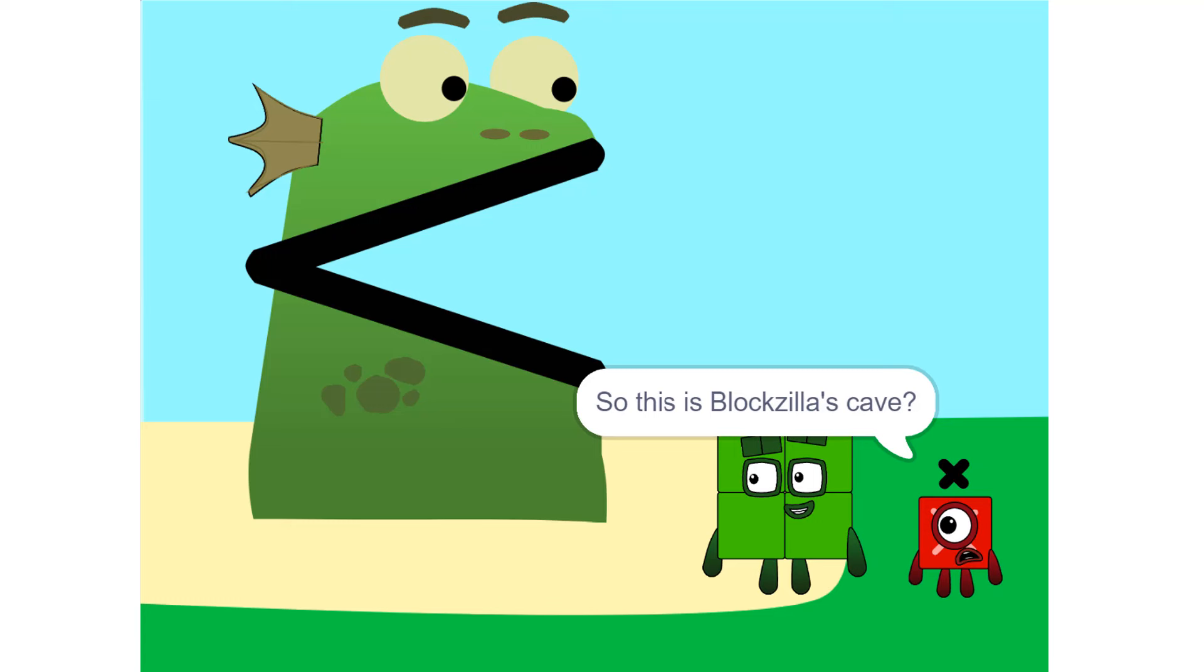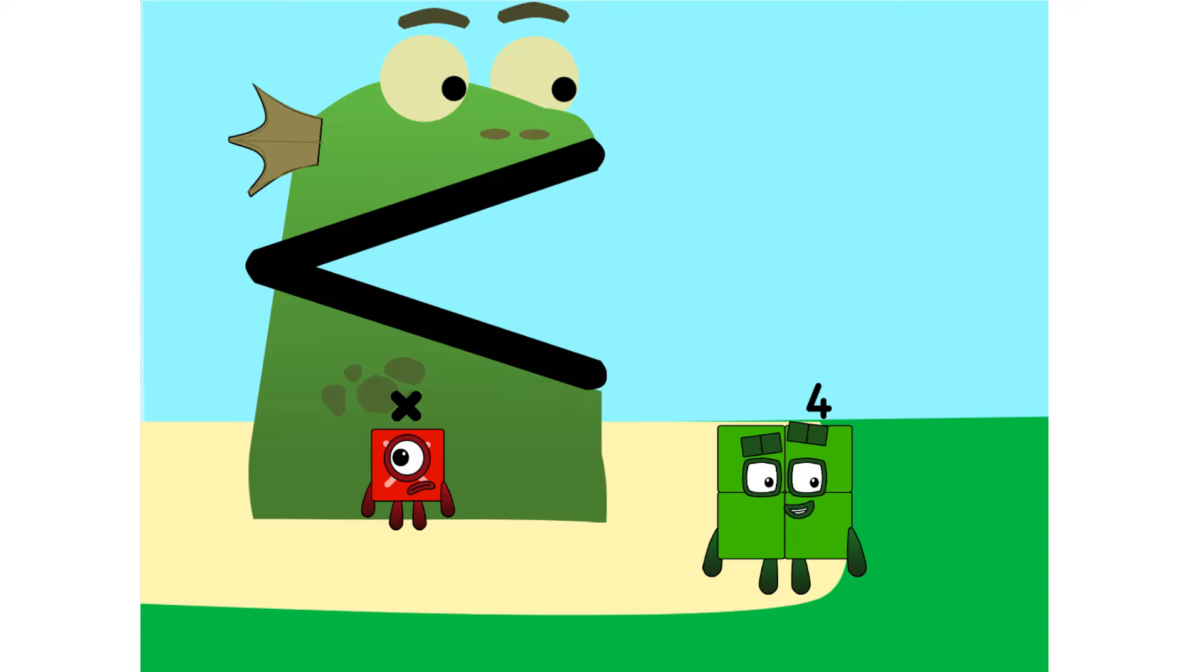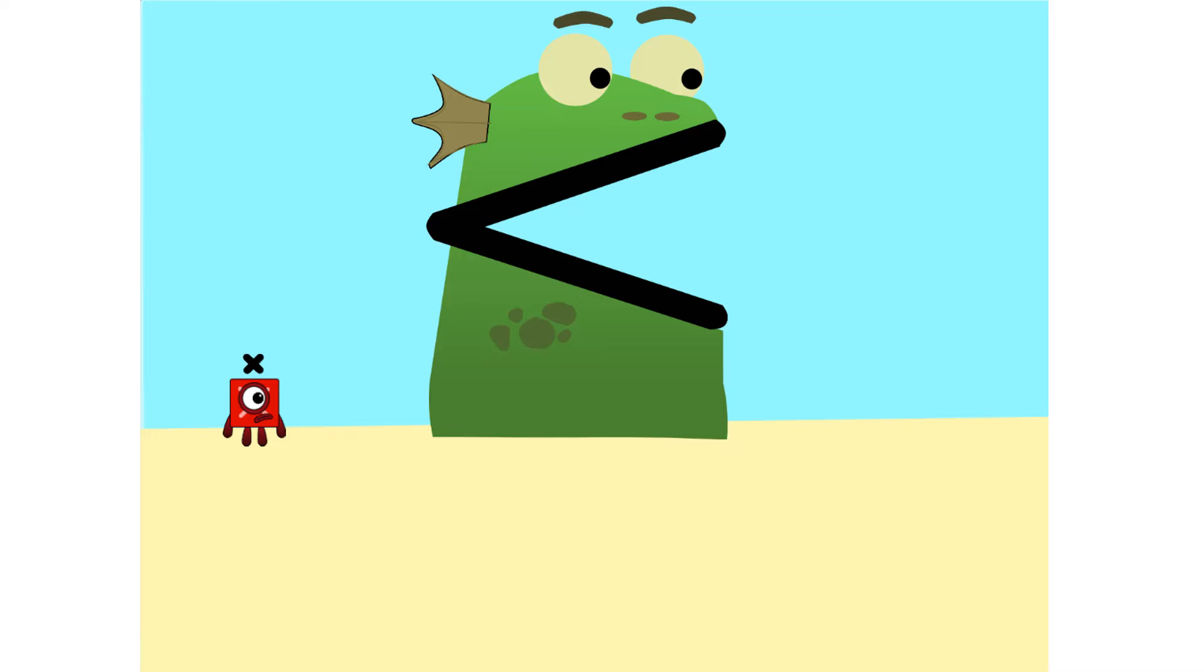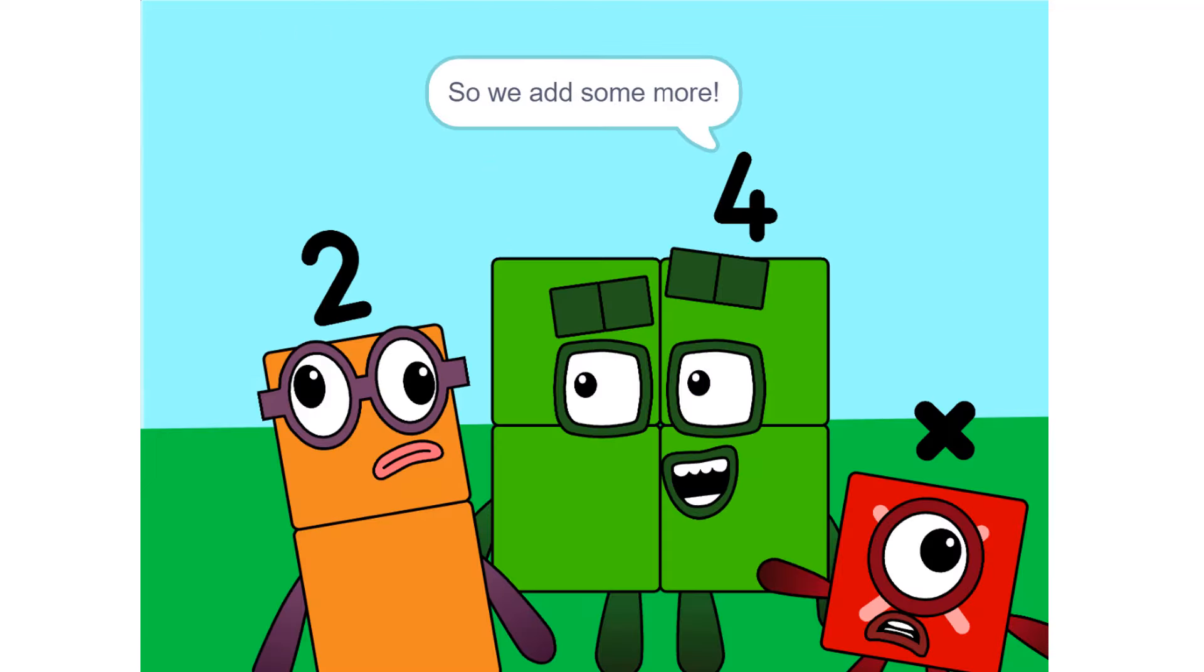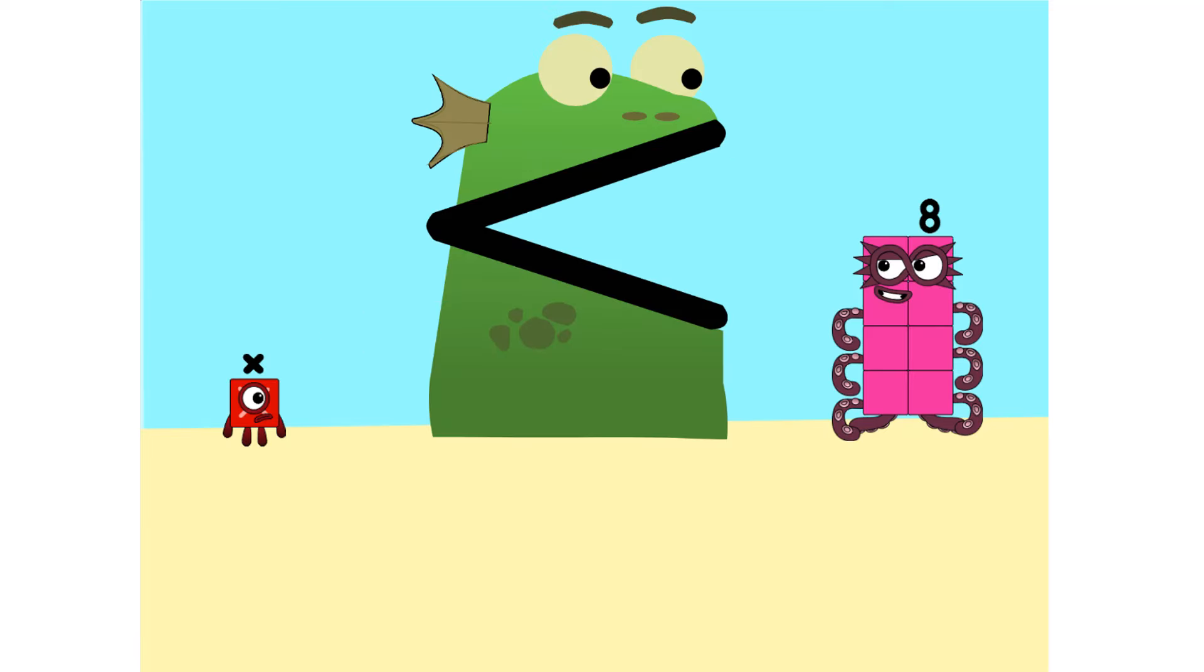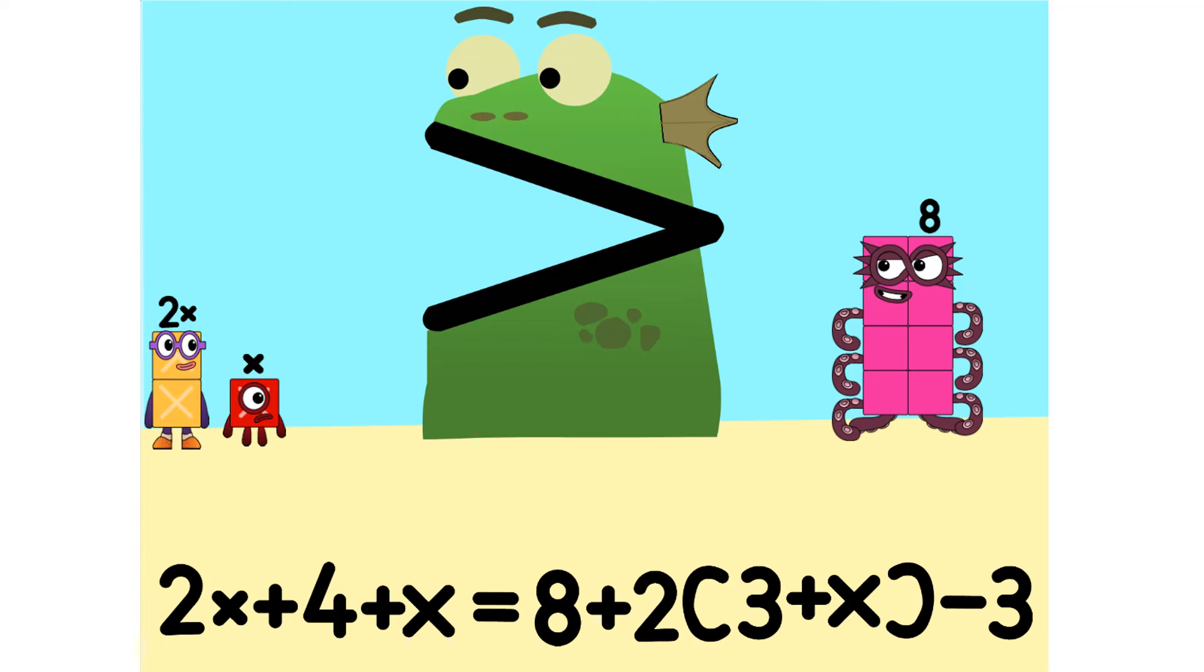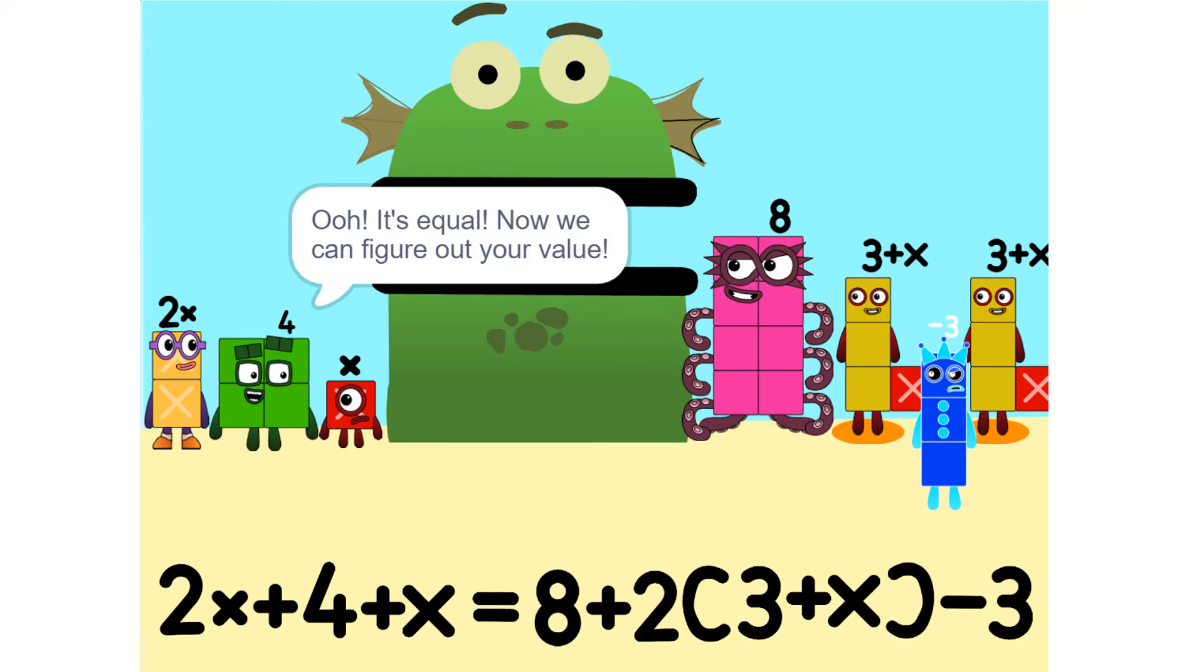So this is Blockzilla's cave? Yeah. We make sure that Blockzilla is not alone. Put you on one side and take something else, and put it on the other. It is greater than x. Me like it. Too heavy. So we add some more. 2 times x equals 2x. Nope. It's equal. Now we can figure out your value.